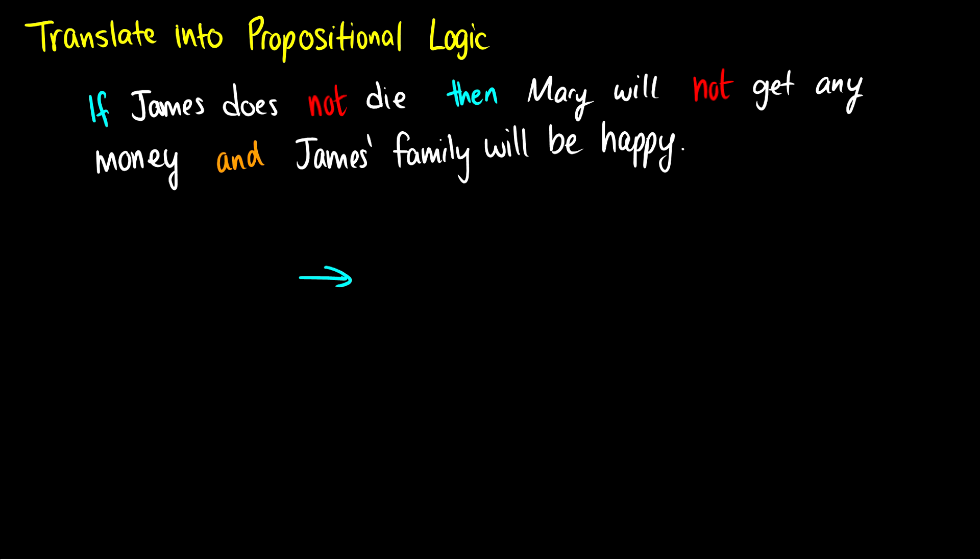So what I see here is I see an if-then statement with James does die with a not in there. So we're going to have not something. Then Mary will not get any money, so there's a not there, and then there's something else. So it looks like our translation is going to take this form. Now we just have to define our keys. So the first key would be James does die, or James dies. So we can call this P is equal to James dies. Now why can't we say P is equal to James does not die? Well, not is a connective.